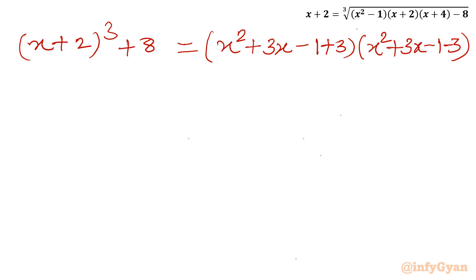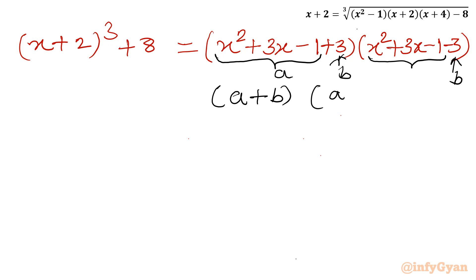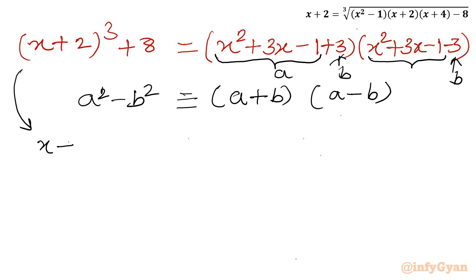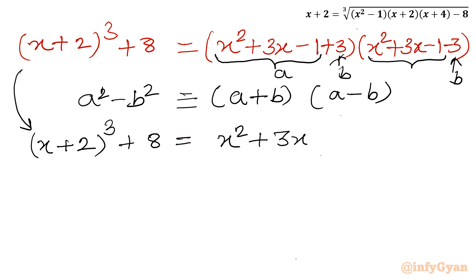Let a = x² plus 3x minus 1 and b = 3. Then the right-hand side is (a plus b)(a minus b), which by the difference of two squares formula equals a² minus b². Applying this, our equation becomes: (x plus 2)³ plus 8 equal to (x² plus 3x minus 1)² minus 3² = (x² plus 3x minus 1)² minus 9.